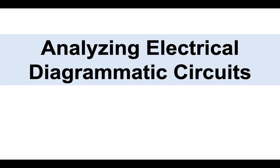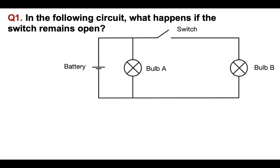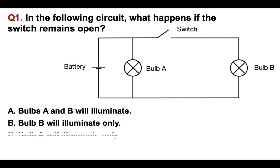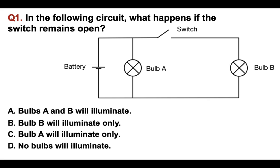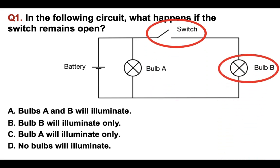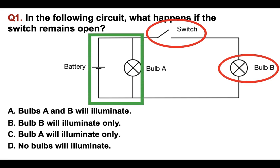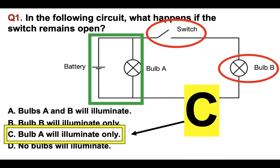Let's go back to analyzing electrical diagrammatic circuits. Question number one: in the following circuit, what happens if the switch remains open? Answer options are: A, bulbs A and B will illuminate; B, bulb B will illuminate only; C, bulb A will illuminate only; or D, no bulbs will illuminate. The switch is remaining open. That means bulb B cannot operate because the switch is open — the circuit is not made. The only part that is made allows bulb A to illuminate. The correct answer is C.